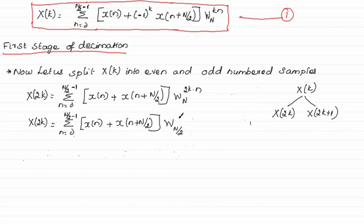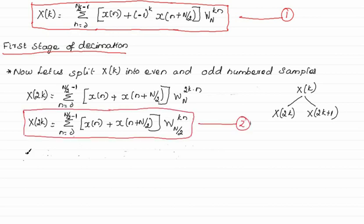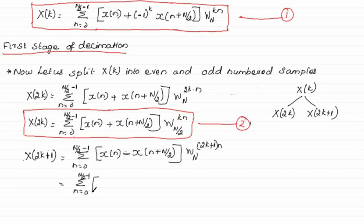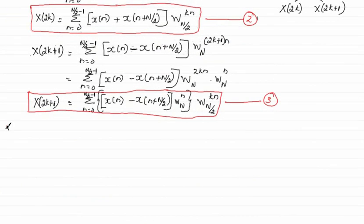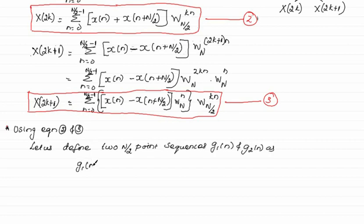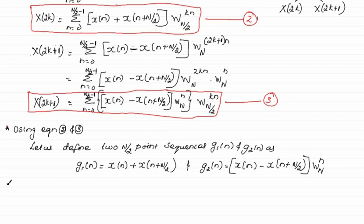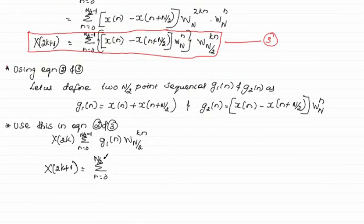Here, Wn power 2kn can also be written as W of N by 2 power kn. Using equations 2 and 3, we define two different sequences G1 of N and G2 of N, where G1 of N is equal to x of N plus x of N plus N by 2, and G2 of N is equal to x of N minus x of N plus N by 2, multiplied with Wn power n.